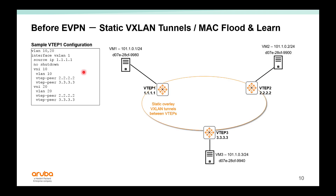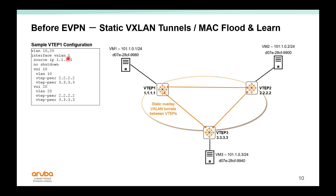Let's compare static VXLAN versus EVPN VXLAN. For static VXLAN on VTEP1: configure the VLANs globally, configure the interface VXLAN, specify a source IP (typically the loopback IP), bring it up, perform VNI-to-VLAN mapping, and specify the remote peers — VTEP2 and VTEP3. The same configuration is repeated for other VNIs and on each remote VTEP. With static VXLAN, tunnels are built manually one by one. For MAC flood-and-learn, when a VM sends BUM traffic (broadcast, unknown unicast, or multicast), VTEP1 learns about it and floods through the data-plane tunnel to all remote VTEPs sharing the same VNI.